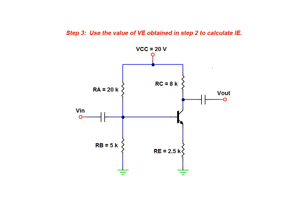Moving on we use this emitter voltage value with the value of resistor RE to calculate the current flowing through the emitter. This is accomplished by simply applying Ohm's law. This results in an emitter current equal to 1.32 milliamps.